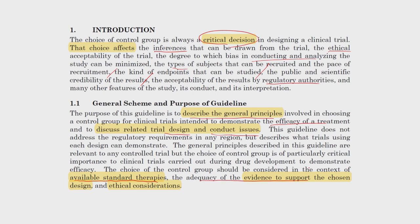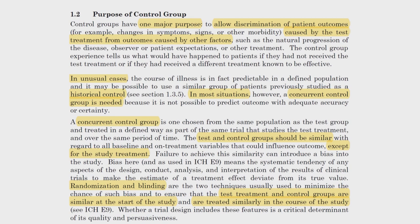The purpose of the control group is to discriminate patient outcomes — whether symptoms, signs, or other morbidity — in order to determine whether outcomes are caused by the test treatment or by other factors. Although it is not usual, the course of illness may not be very predictable, and that is why historical control rather than concurrent control can be used when the course of illness is predictable. In most cases that is not the situation, which is why we need a concurrent control group.